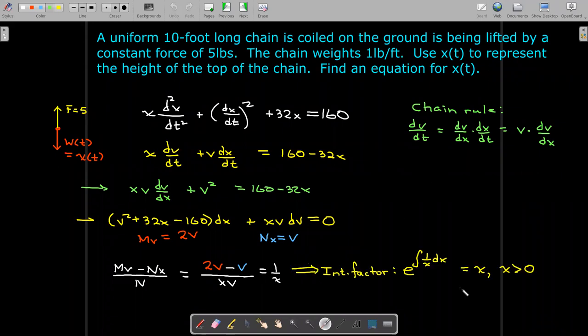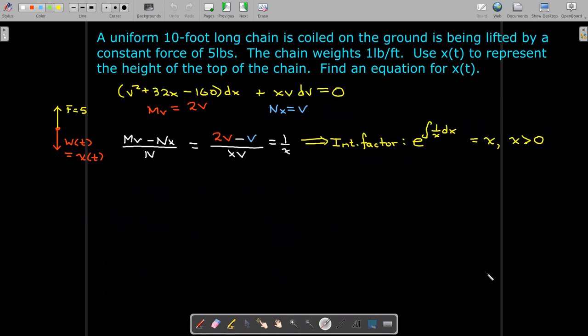So if I subtract those two, I only get v. If I divide that by my N function, which is xv, I get a function of x only. So I should be able to use that to find an integrating factor. It would be e raised to the power of the integral of 1/x dx. Of course, that's the natural log of x. If I assume x is positive, I don't have to worry about the absolute value signs. So my integrating factor is just x. Let's go ahead and multiply both sides by x.